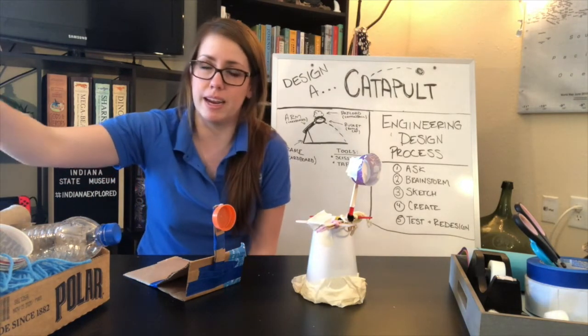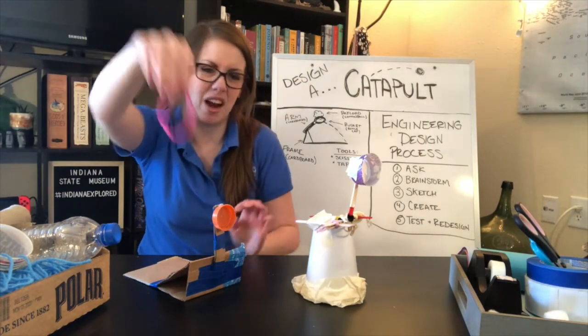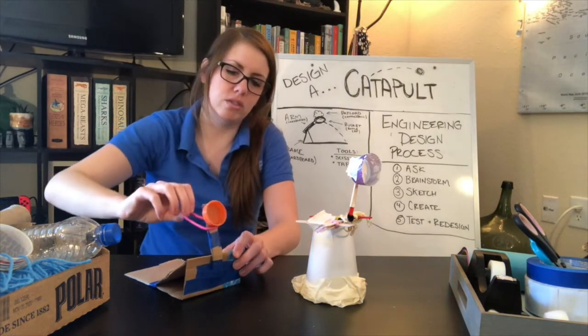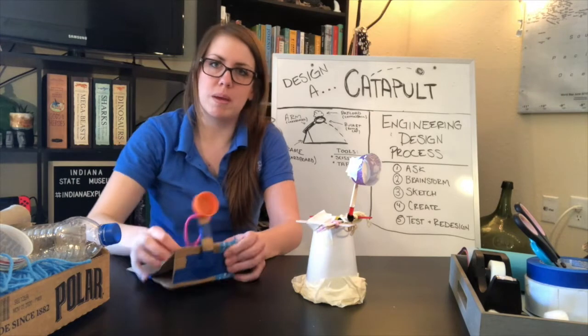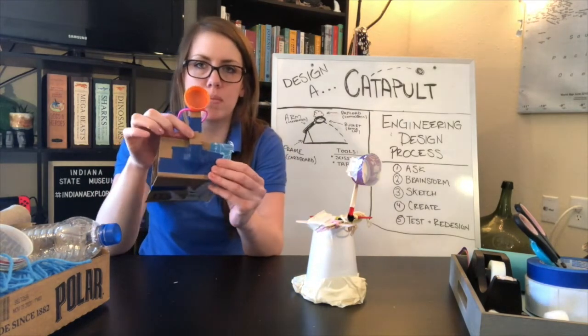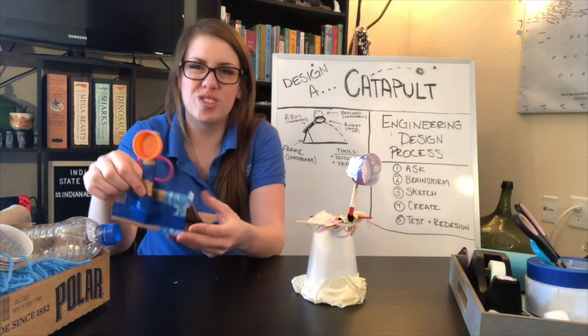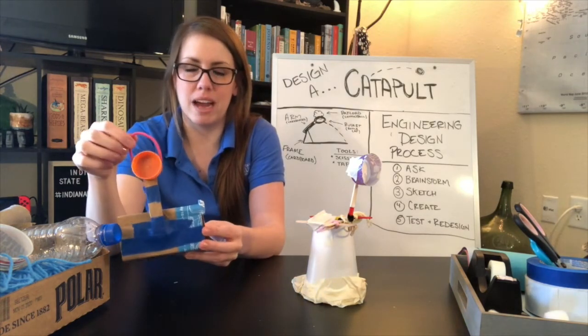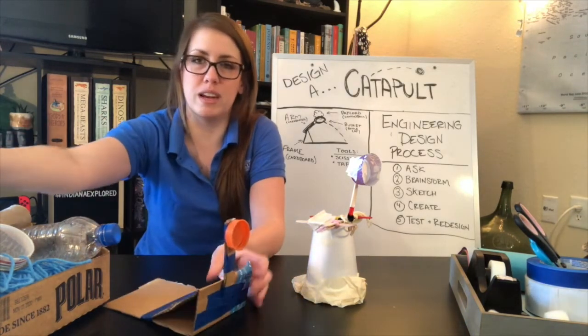Maybe that's something like adding a rubber band. I've got a hair tie right here that I could use to pull it back to make it stronger. Maybe I can reinforce the arm a little bit better so it's a little bit sturdier. Those are all things that you can think about as you go through and improve and redesign.